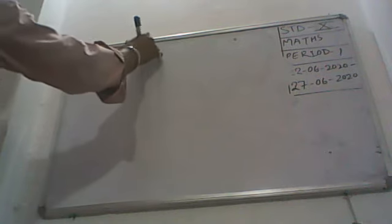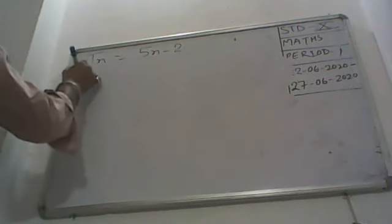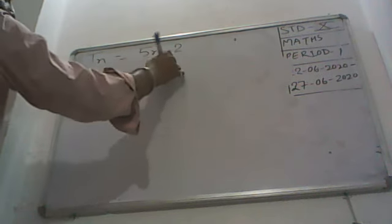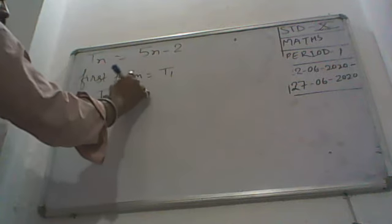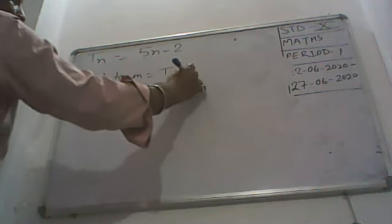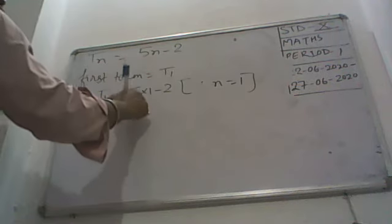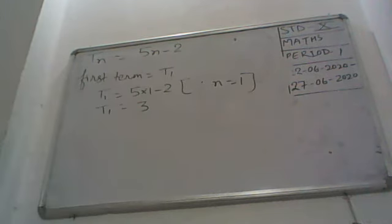Let me write this AP in the term of the AP. TN is given 5N minus 2. We have to find first term of AP. Always remember first term, that is T1 here. T1 is equal to 5 into 1 minus 2. Since N is equal to 1, so 5 minus 2 is equal to 3.